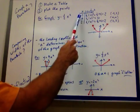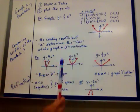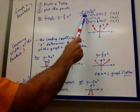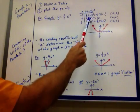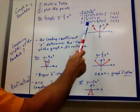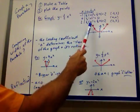When x is negative 2, you plug in negative 2 for x. You're going to square it — half of 4 is 2. Of course you square 0, that's 0, and half of that is 0. And then half of 4 is 2.